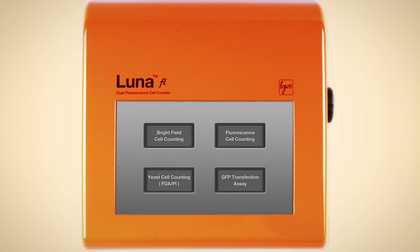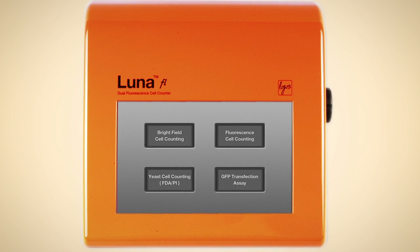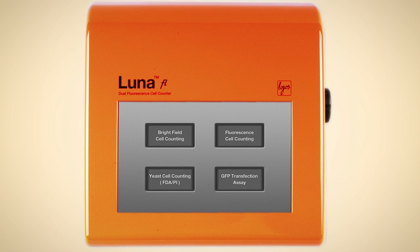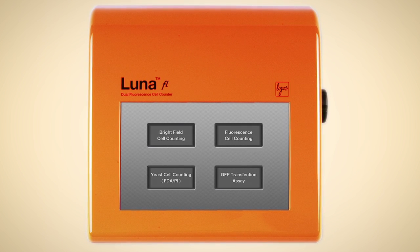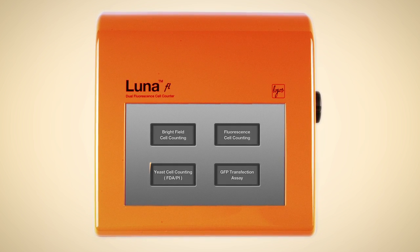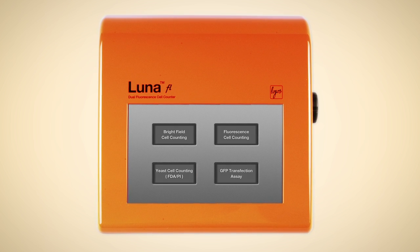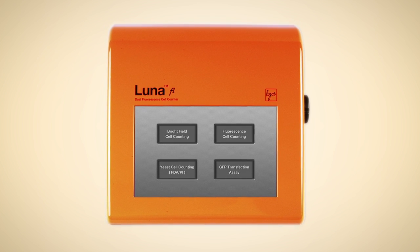For situations where fluorescent analysis is not necessary, bright-field optics are available for trypan blue staining. The GFP transfection assay mode calculates the concentration of GFP-positive cells to measure transfection efficiency. Yeast concentration and viability can also be measured using the yeast viability kit offered by Logos.